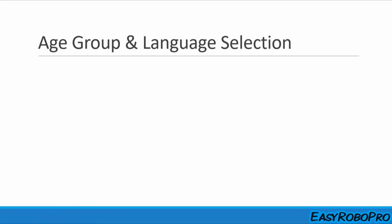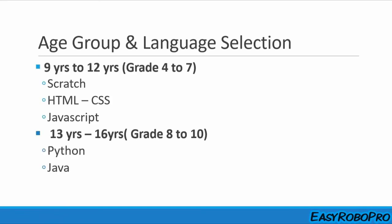Once you know the top 5 programming languages, the next question is which language to start with and at what age. The recommended age for learning programming is age 9. For children aged 9 to 12 years, in grade 4 to grade 7, start with Scratch programming first, building smaller programs and gradually moving to more complex ones. Then shift to web designing with HTML, CSS, and JavaScript. For children aged 13 to 16 years, in grade 8 to grade 10, start learning advanced programming with Python and Java — both languages are recommended to build a good programming portfolio.